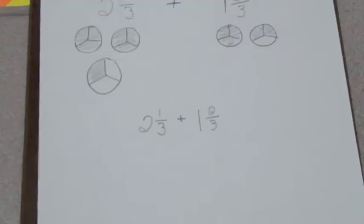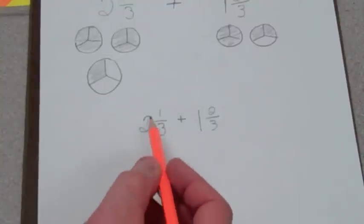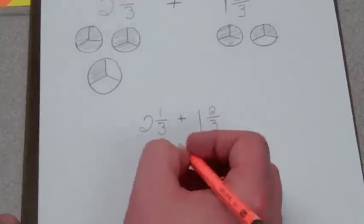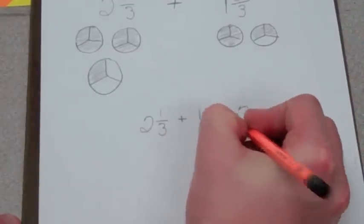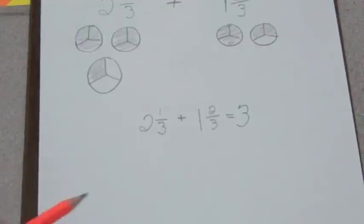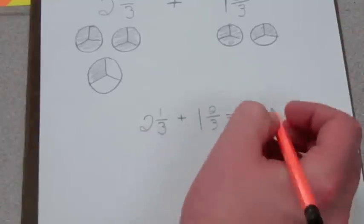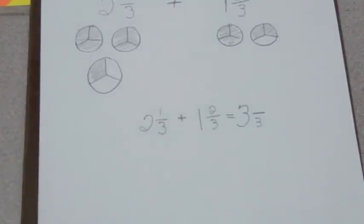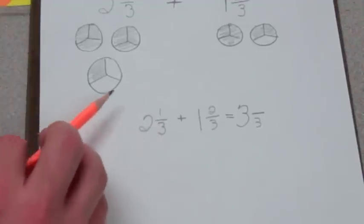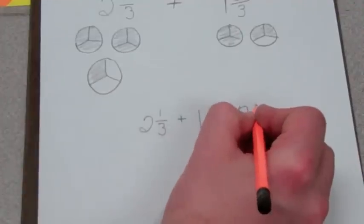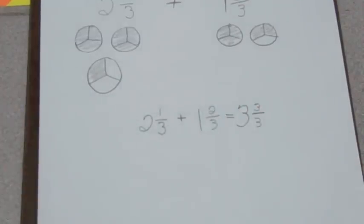Excellent. Once I check that, everything else is simple and easy. The first thing I'm going to do is add my whole numbers. I have two and I have one. Two plus one is three. Now, since my denominators are the same — which we've already established — all I have to do is keep the denominator the same. I have a three, I have a three, keep it a three, don't change it. Now I can just add my numerators. One plus two equals three. So far so good. Little Jimmy and me, we have three whole pizzas and three out of three pieces of another one.